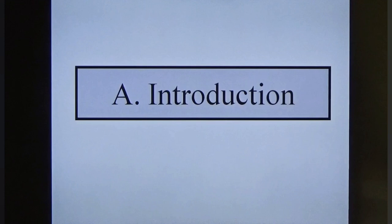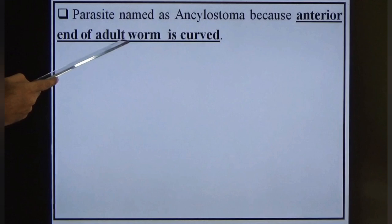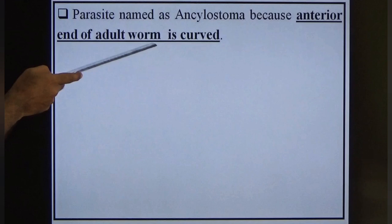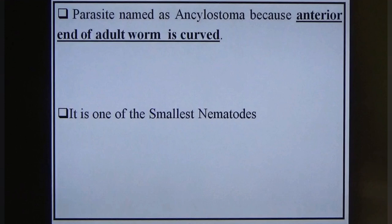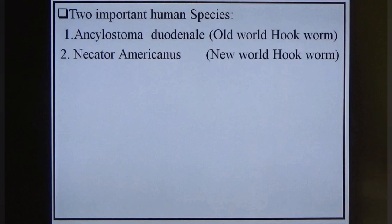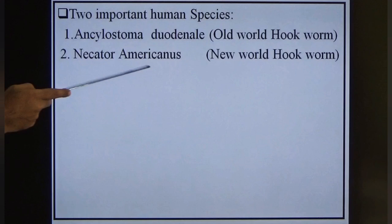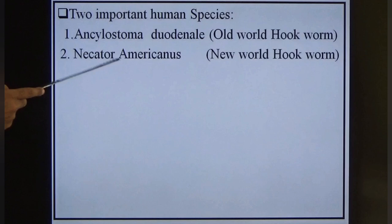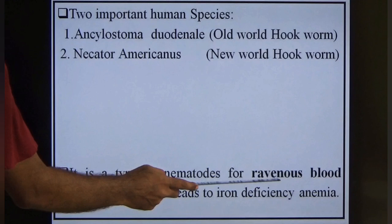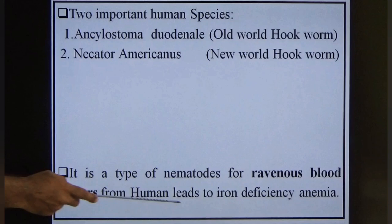The parasite is named Ancylostoma because the anterior end of the adult form is curved anteriorly. It is one of the smallest nematodes, first identified in 1838. Out of four species, two infect humans: Ancylostoma duodenale, called the Old World hookworm, and Necator americanus, the New World hookworm. Necator means 'killer.' It is a blood feeder causing iron deficiency anemia, which we will discuss under clinical features.